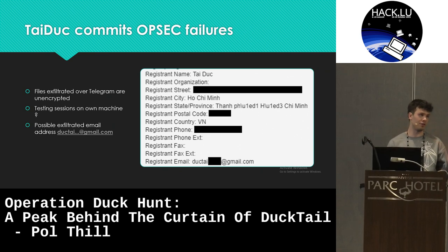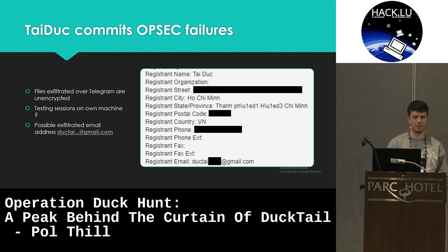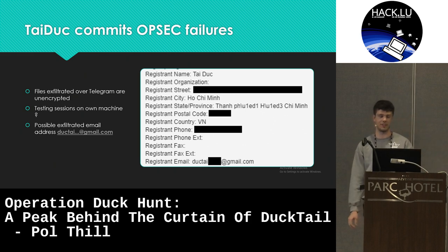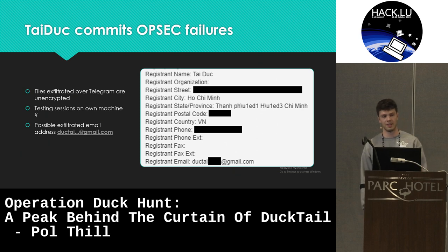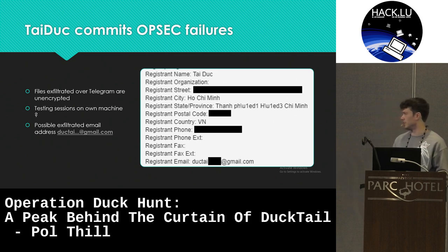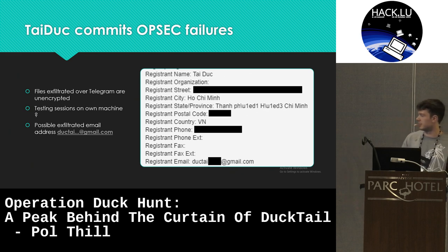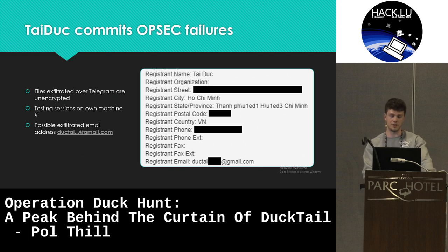The first version of DuckTail didn't encrypt the exfiltrated zip files, so you could just capture and read them. He also did testing sessions on his own machine, which led to his specific email being exfiltrated — DuckTail followed by a few numbers at gmail.com. That email was used a few years ago to register a domain, which reveals his name, email address, city, and country: Vietnam. This is probably where WithSecure came up with the name DuckTail.